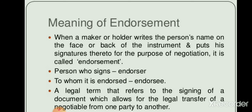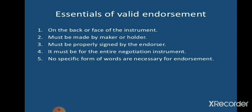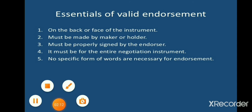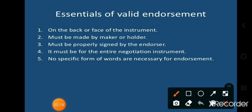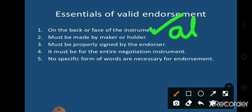Next we look at the essentials of a valid endorsement. As discussed in the meaning, first, it must be endorsed on the back or face of the instrument, or on a separate sheet which we call an allonge. Second, it must be made by the maker or holder of the instrument. Third, it must be properly signed by the endorser — proper signatures are required, they must be in ink, and pencil-written signatures are not acceptable.